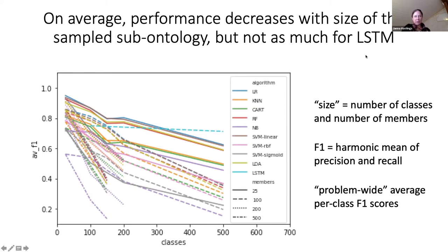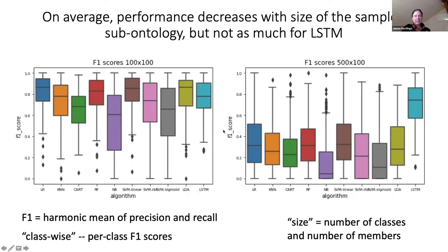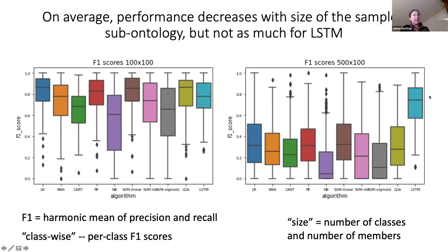This was surprising, but once we thought about it we realized it was most likely an artifact: if you have selected more members, you've had to choose broader classes from ChEBI, a finite dataset, and broader classes would have more semantic overlap and therefore be harder to distinguish with machine learning. The LSTM was the deep learning approach we used, and in contrast to the classical approaches — which have similar patterns — the LSTM's performance does not decrease so much with the size of the problem. This is very noticeable comparing 100-class performance to 500-class performance: while simple regression is best on the smaller problem set, the LSTM is dramatically the best performing at larger numbers of classes.